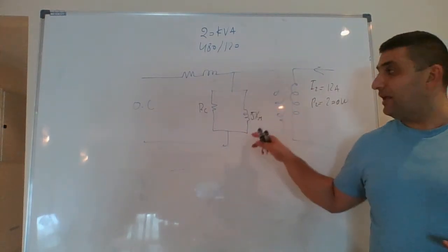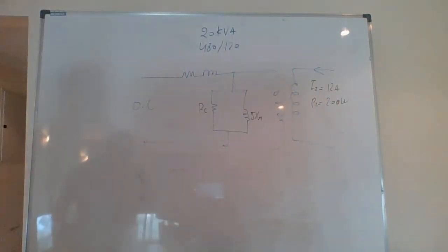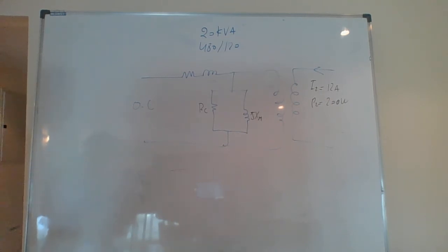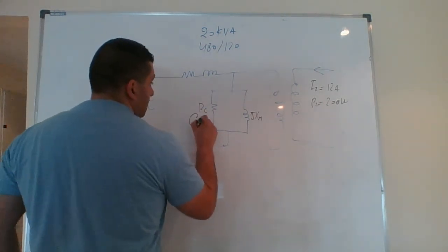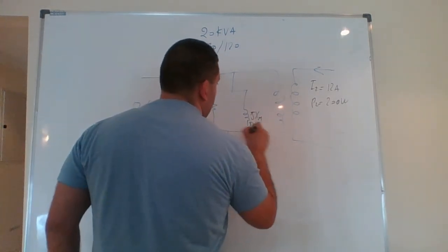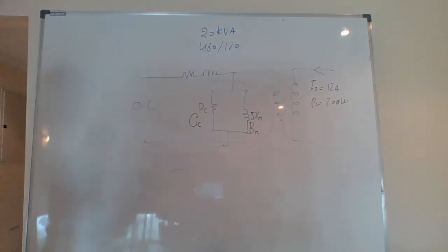Because R_C and jX_M are in parallel, it's easier to work with admittance. I call the admittance of R_C as G_C, and the admittance of jX_M as B_M. The total shunt admittance I call Y_M, which equals G_C minus jB_M.